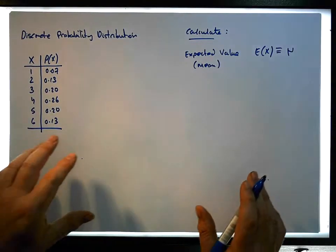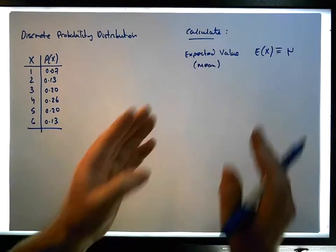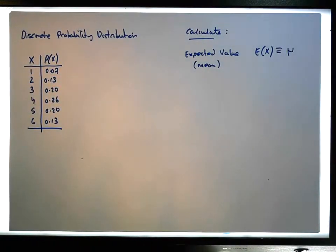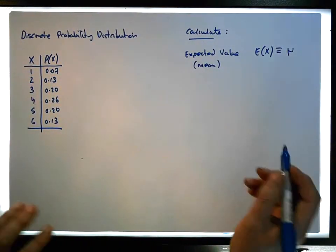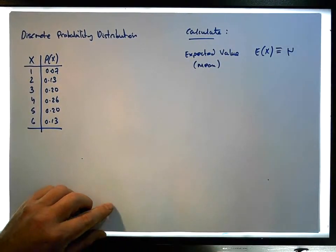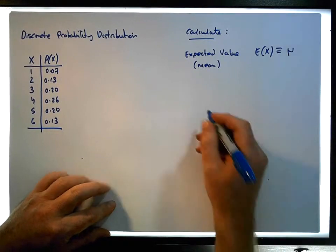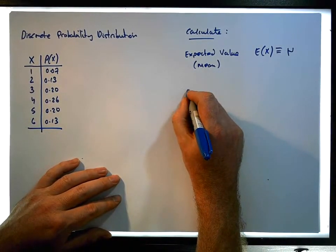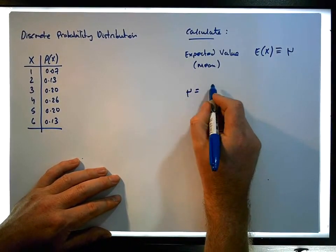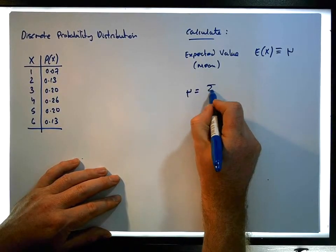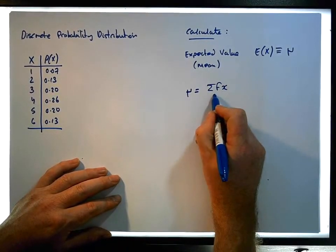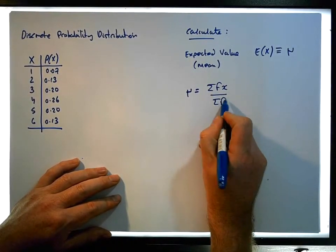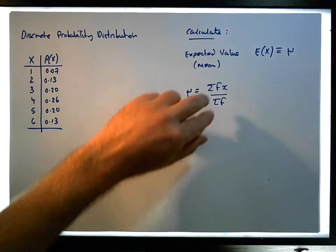This video is about understanding where the formulas come from with respect to discrete probability distributions. Let's go back to the mean of a discrete frequency distribution. We know that μ is simply equal to the sum of the frequencies times the x's, divided by the sum of the frequencies.